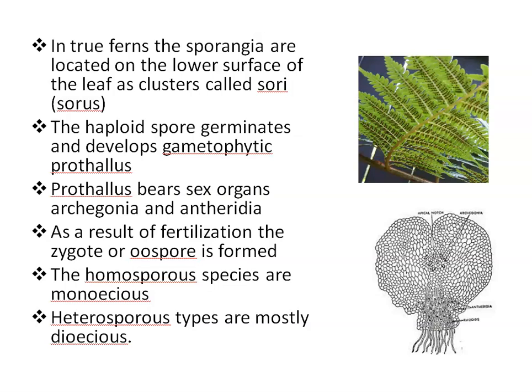On the stem, sporangia may be terminal, as in the case of Rhynia; lateral, as in Lycopodium; or on the surface of the leaves, as in ferns. The leaves that bear sporangia are called sporophylls. The sporangia are borne on the ventral side of the specialized leaf called sporophyll. In true ferns, sporangia are located on the lower surface of the leaf as clusters called sori — these black dot-like structures, sori, singular sorus.